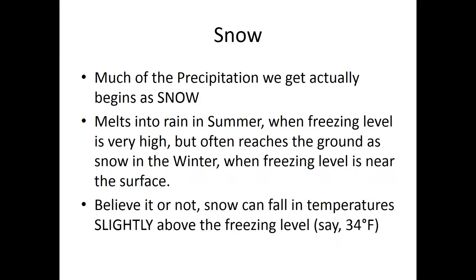Now, what about snow? As mentioned in the previous lecture, most of the rain we get actually starts off as snow. This is because of the Bergeron process — the process of ice crystals growing is much easier than the collision and coalescence process. As a result, snow is actually where most precipitation starts off.